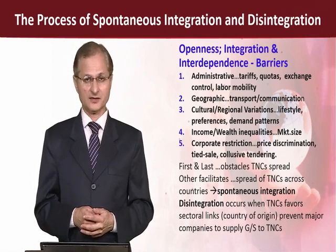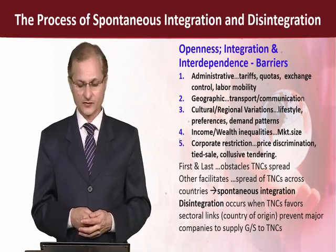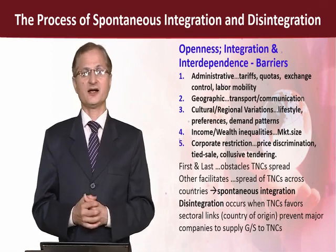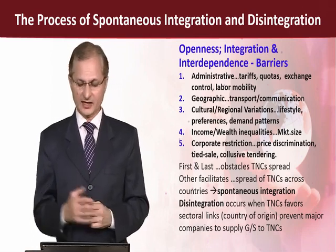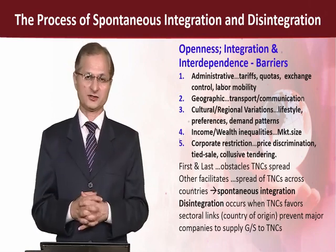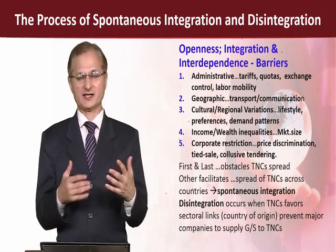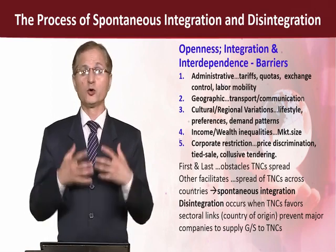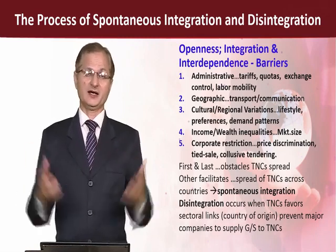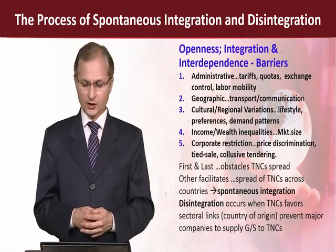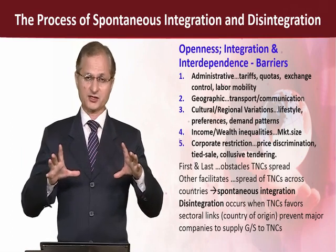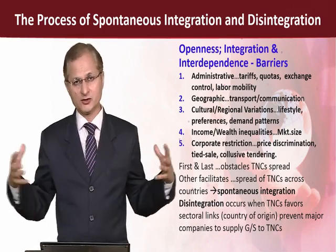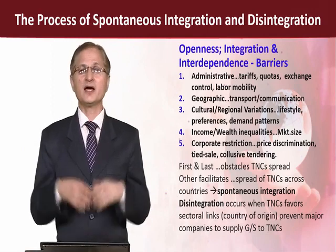Corporate restrictions include price discrimination, tied sales, collusive tendering, and more. Administrative barriers and geographic barriers are the two restrictions that transnational corporations cannot violate — they must face and handle them effectively. All others generally facilitate TNCs in growing their production and spreading their operations across countries. Whenever transnational corporations work more across the economies of the world, they spontaneously integrate those economies.